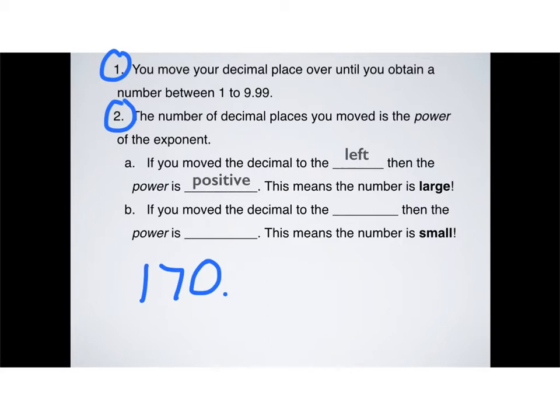So, before, when we said you have to have a number between 1 to 10 as your coefficient, what we really were saying is it has to be between 1 and 9.99. And so, right now, I have 170. If I move my decimal place over, I have one space, that is, I have 17. If I move it over a second space, I have 1.7. Now, 1.7 is a number between 1 and 9.99. So, I stopped moving my decimal place.